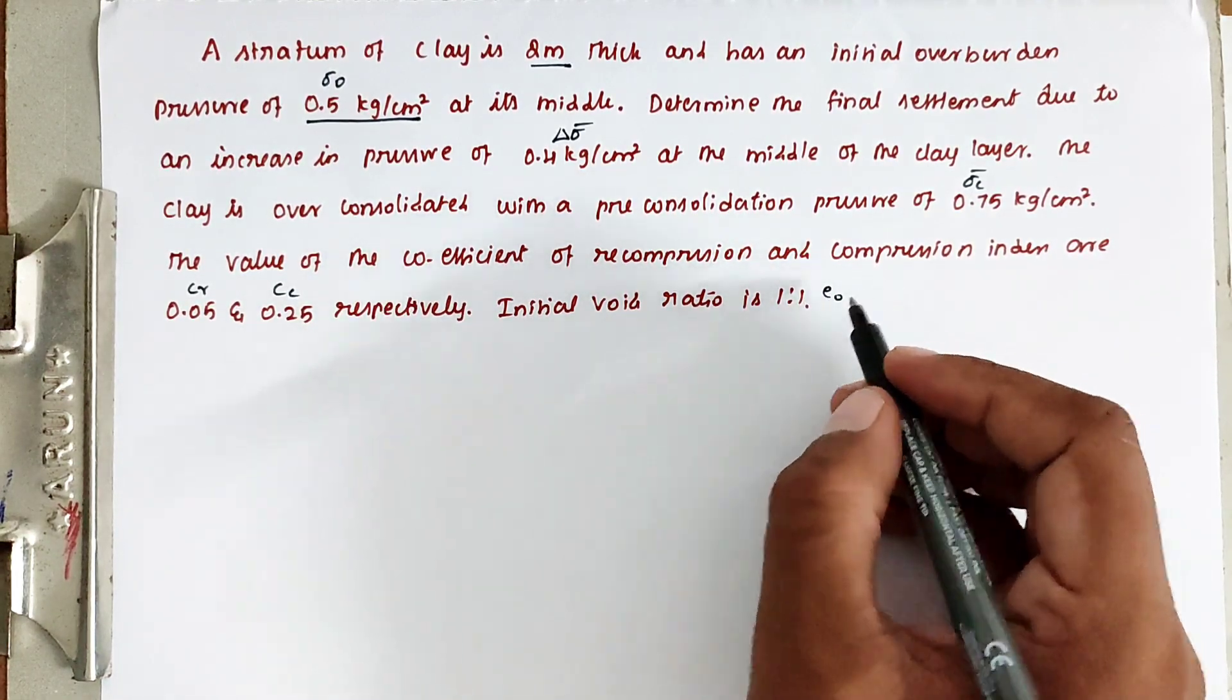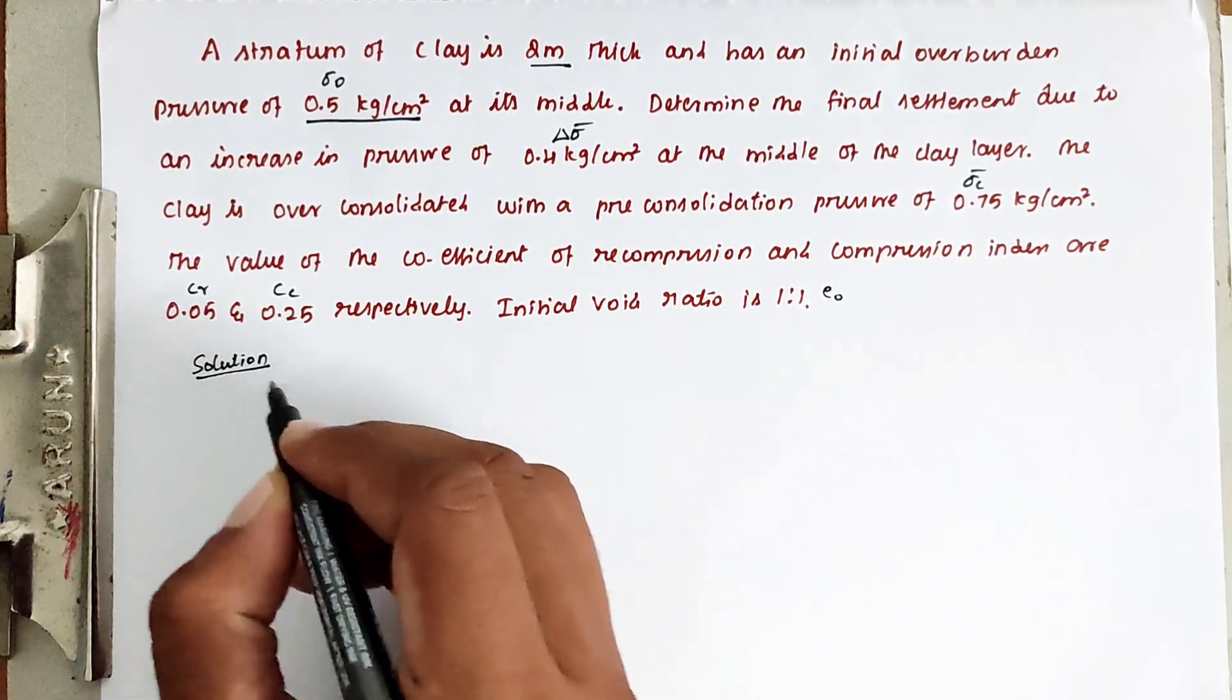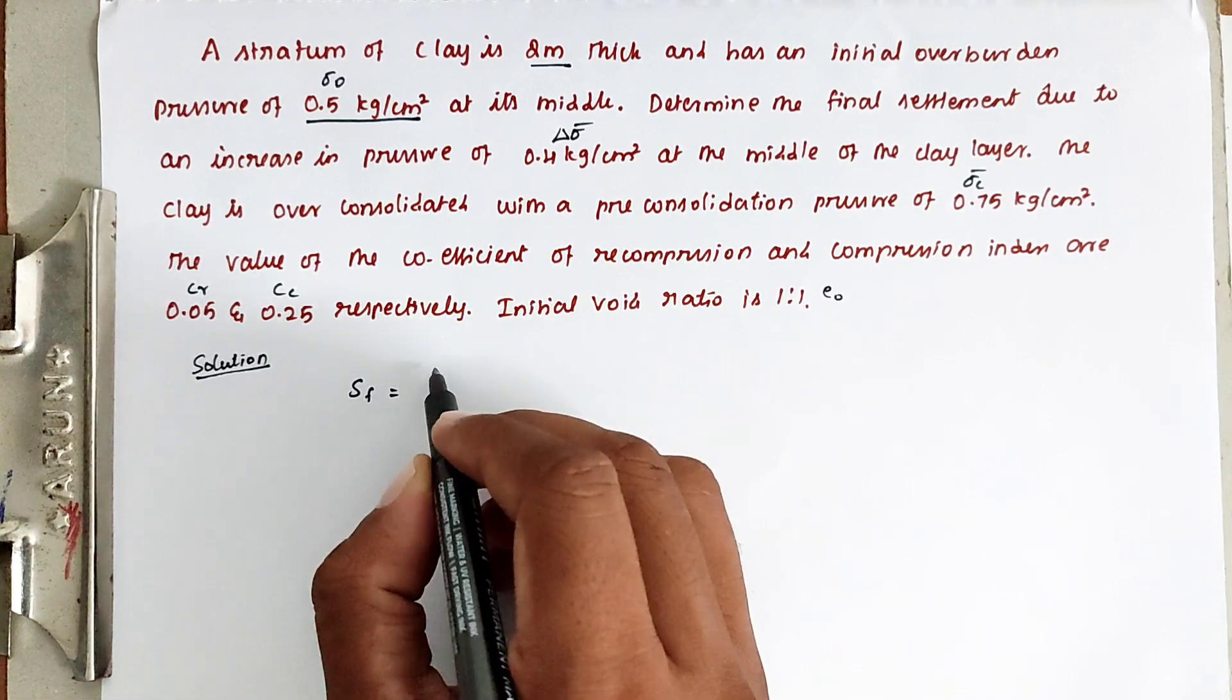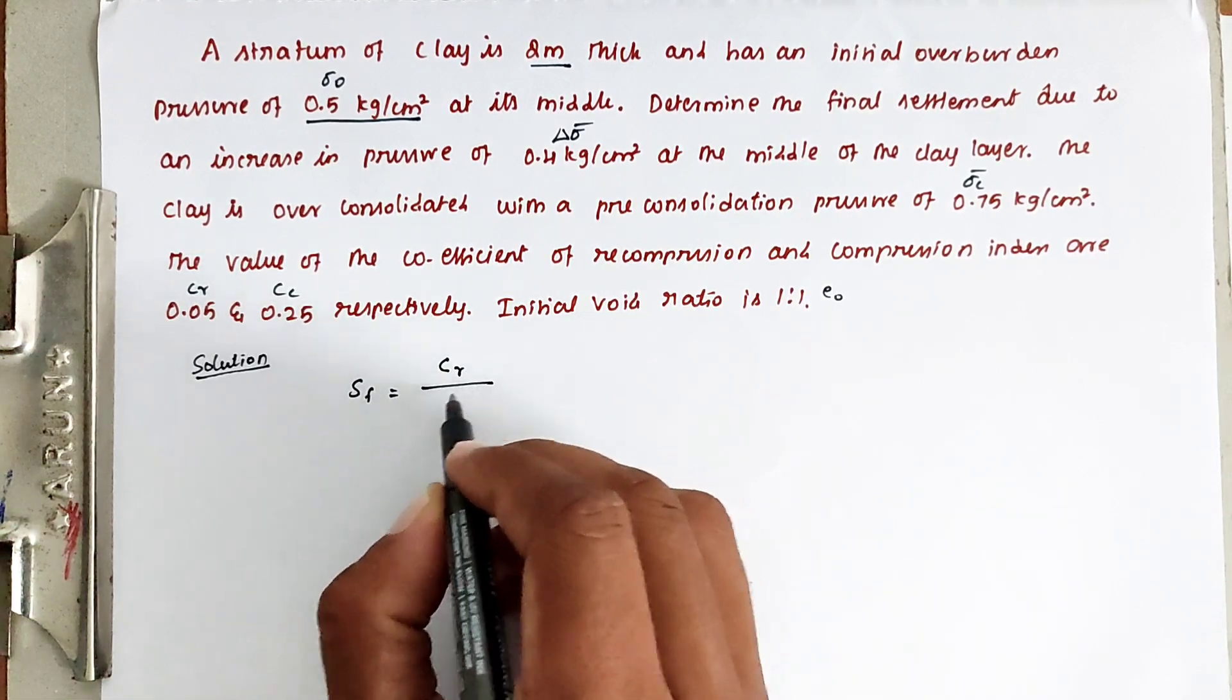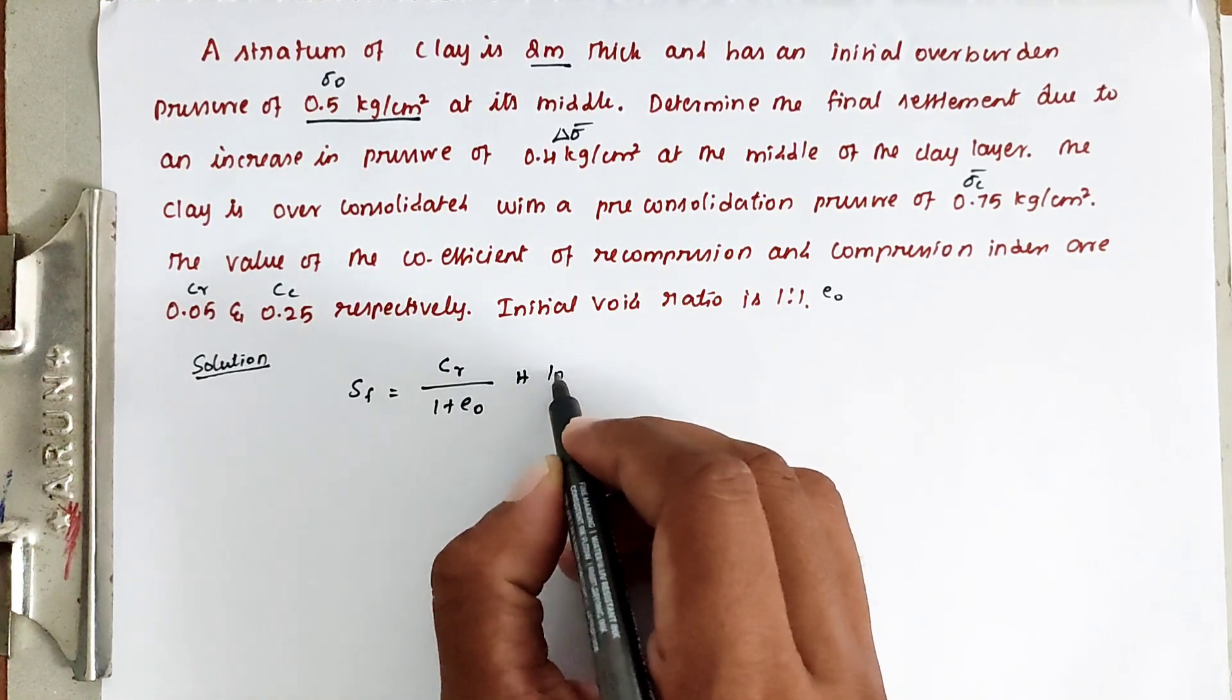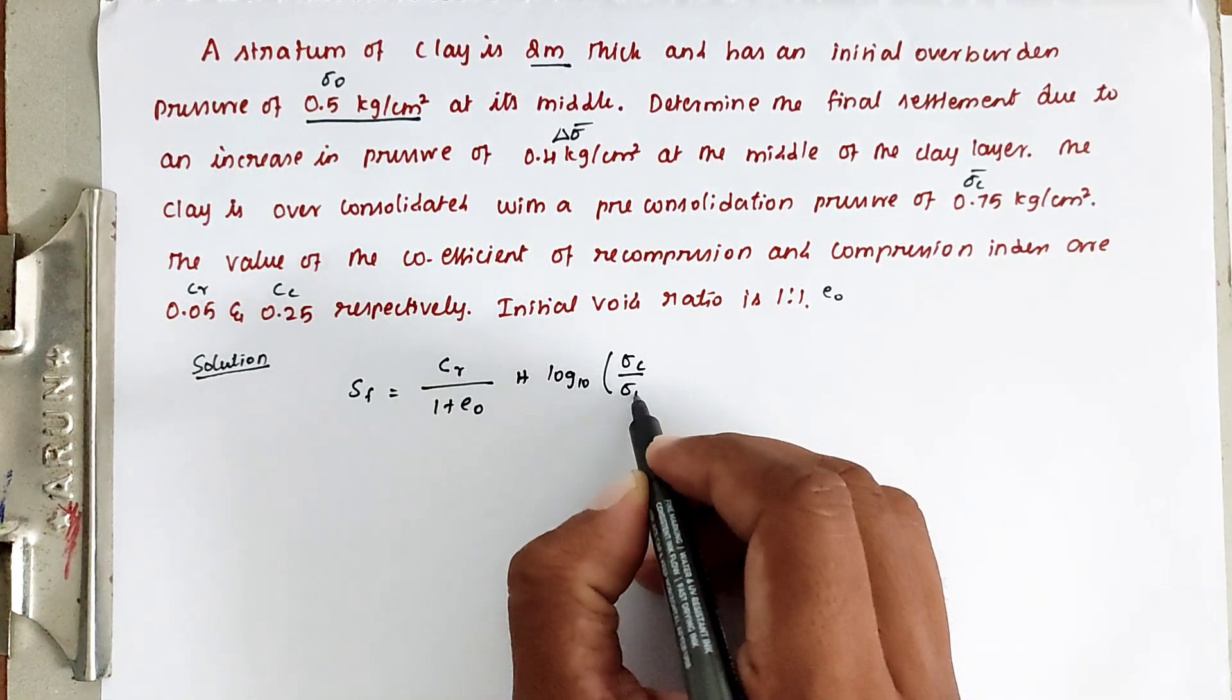Now the solution: the final settlement Sf equals the formula Cr divided by 1 plus e naught, into h, into log 10, into sigma Cr divided by sigma 0.